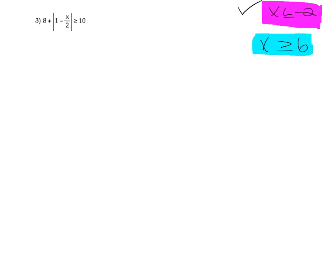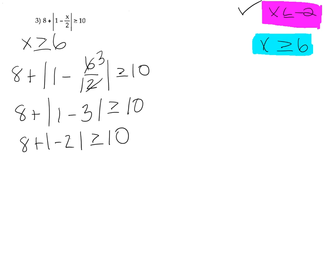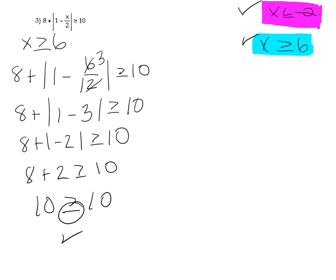Now we'll check the second solution, x is greater than or equal to 6. Plugging 6 back into the original equation: 8 plus the absolute value of 1 minus 6 over 2, greater than or equal to 10. Simplifying the inside, 6 over 2 is 3, so we get 8 plus the absolute value of 1 minus 3, which is the absolute value of negative 2, equal to positive 2. This gives 8 plus 2 is greater than or equal to 10, so 10 is greater than or equal to 10 — a true statement. Both solutions are correct.